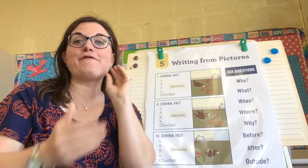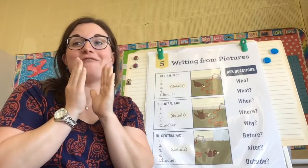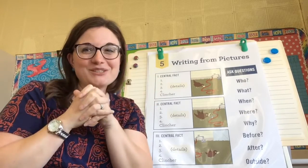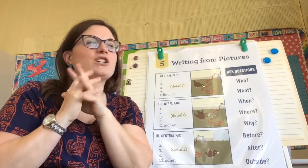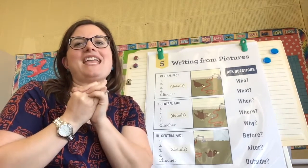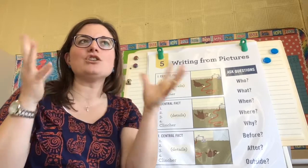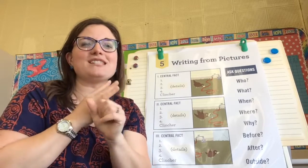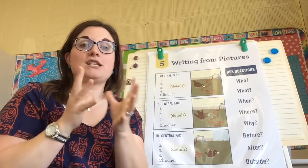Good morning grade twos, and I believe Noah is joining us. We are going to move into unit five for writing. We have finished unit four where we were taking true facts about animals — roosters, chickens, how dogs are our best friend — and picked out the most interesting or important ones and put them into a paragraph.